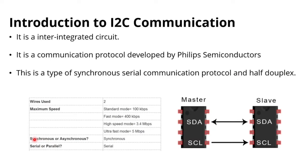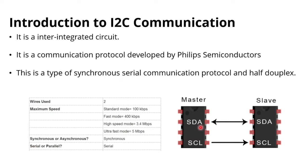If someone asks whether I2C is synchronous or asynchronous, it is always synchronous — we use a clock to transfer data from master to slave or slave to master, and this clock is always initiated by the master. The speed of the I2C protocol mainly depends on the clock frequency. It is serial communication because we transfer bit by bit from the master to the slave.